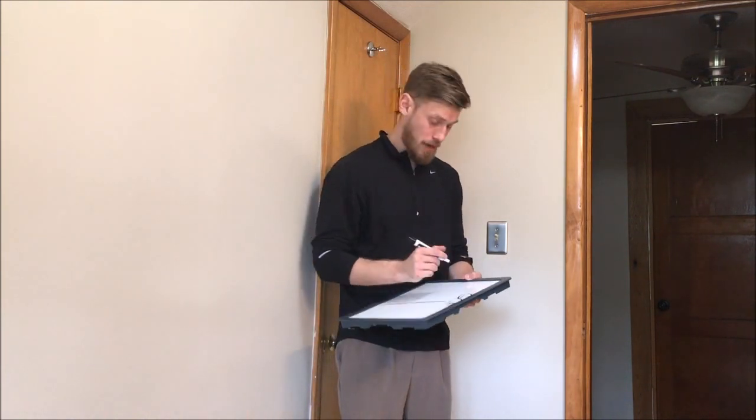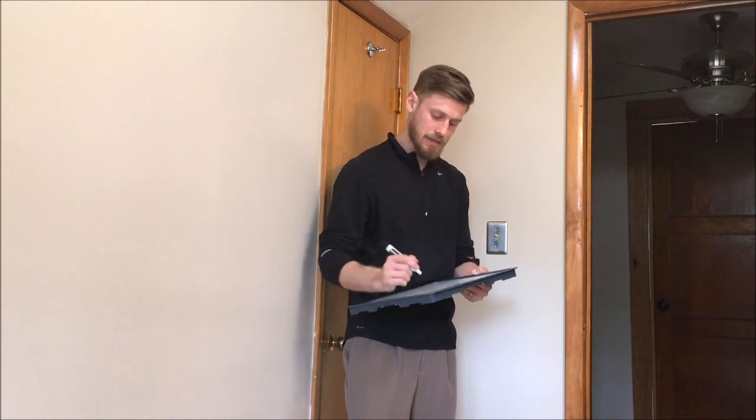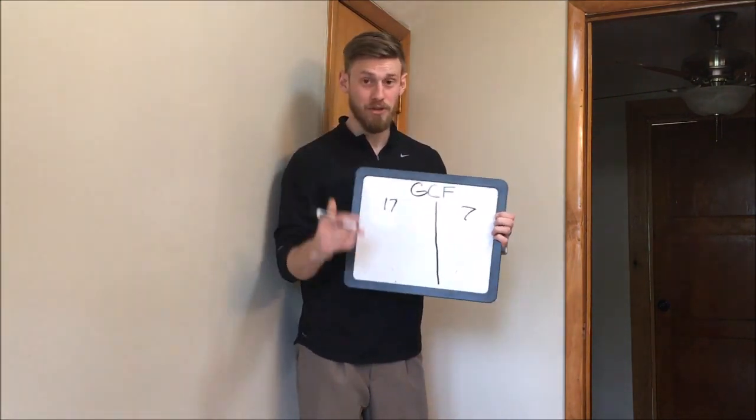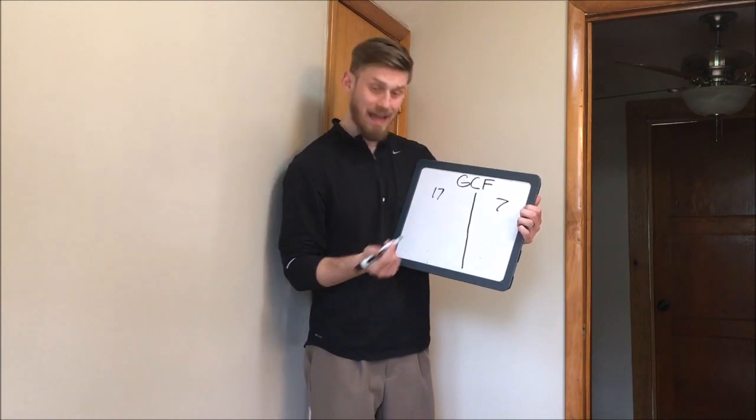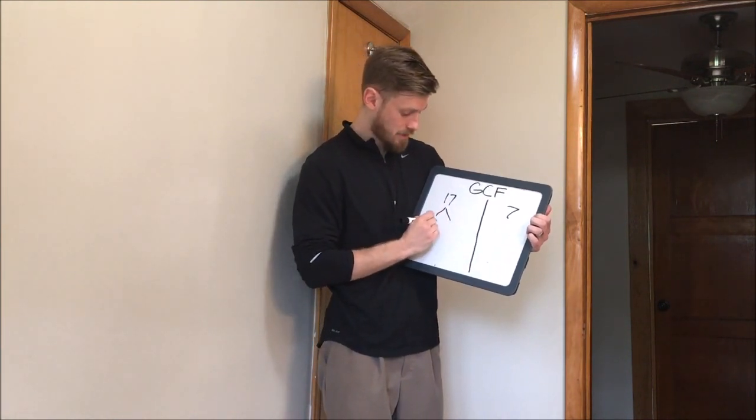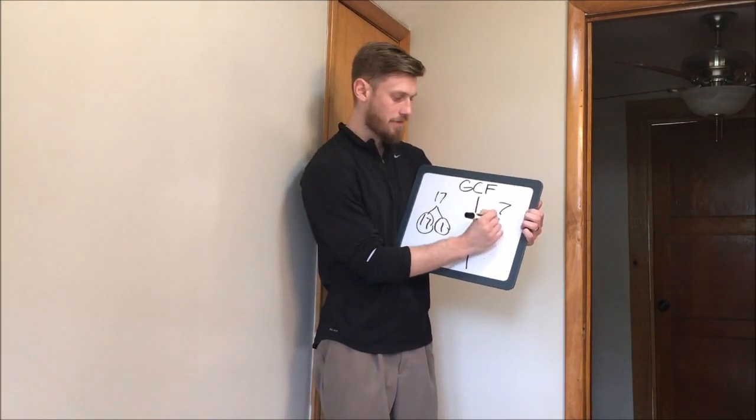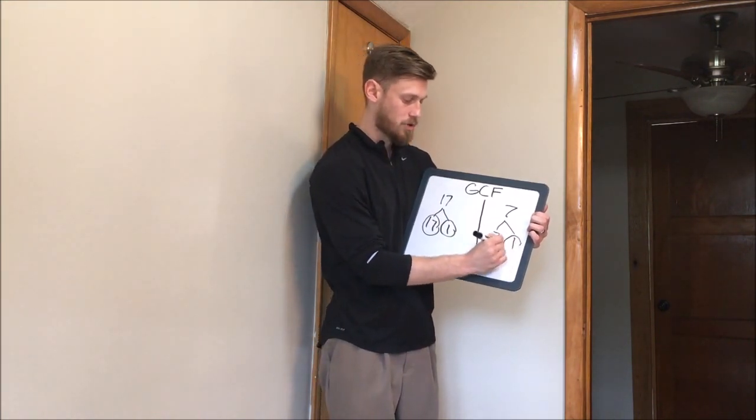All right. Check this out, Gramps. So we have a problem like this. 17 and 7, 2 prime numbers. I'm going to answer your question. Well, if we break that down, the only thing that can go into 17 is 17 and 1. Circle your primes. And 7 and 1. Circle your primes.